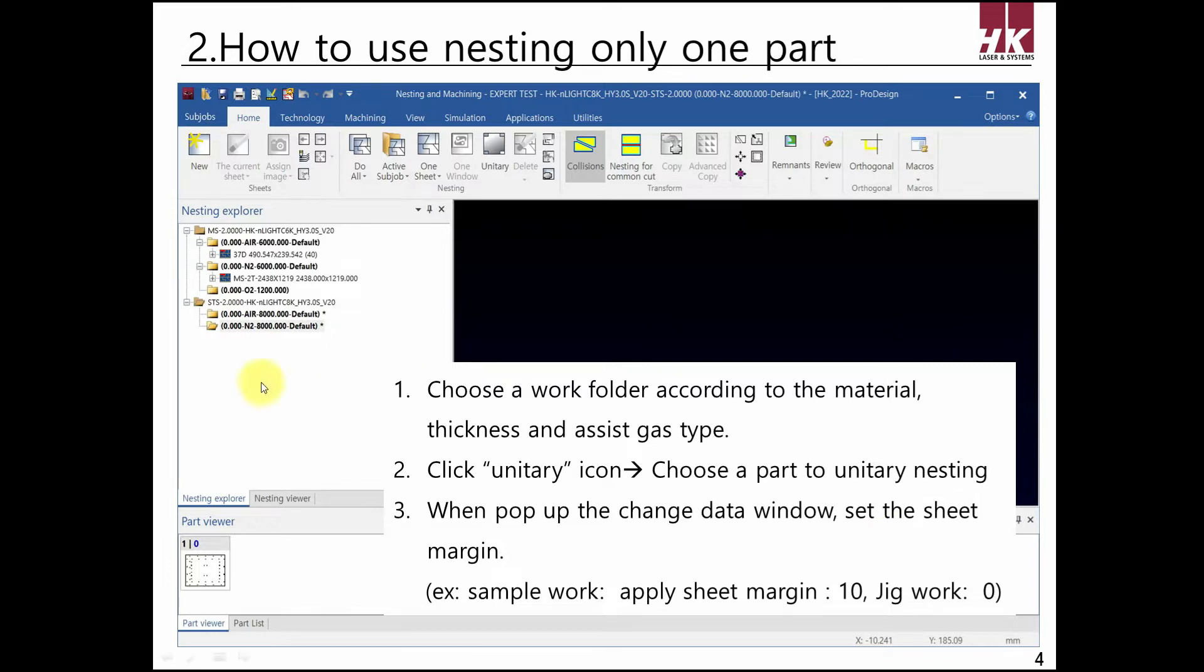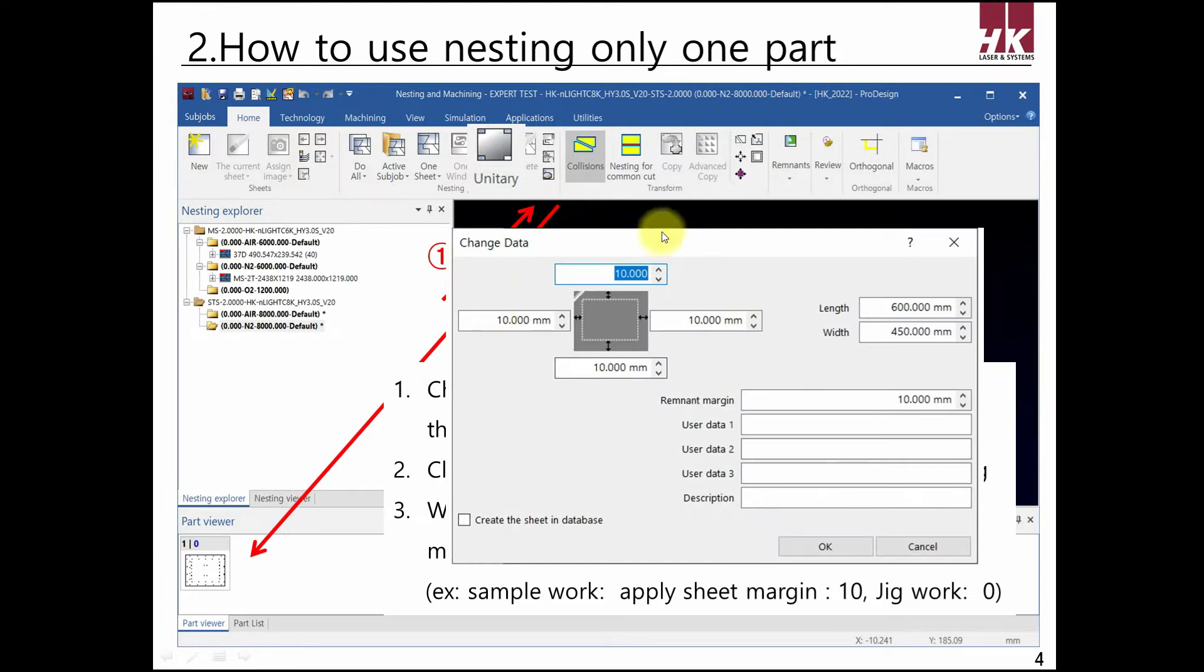Select folder in Nesting Explorer. Click Unitary in Home tab and select part to nest in Part Viewer. Now input margin left, right, up and down to origin or sample work.